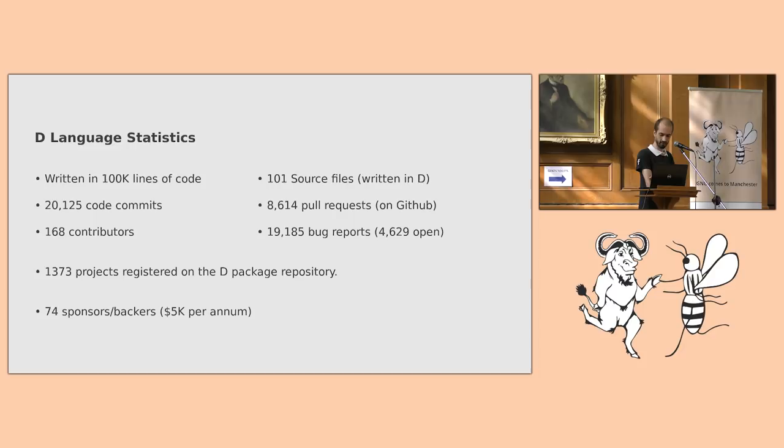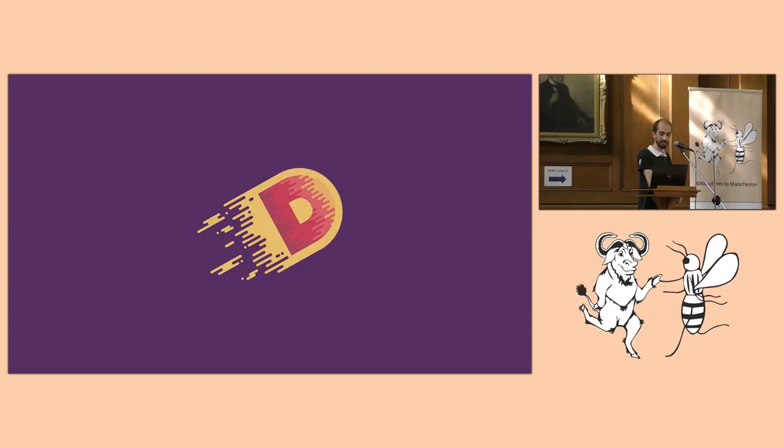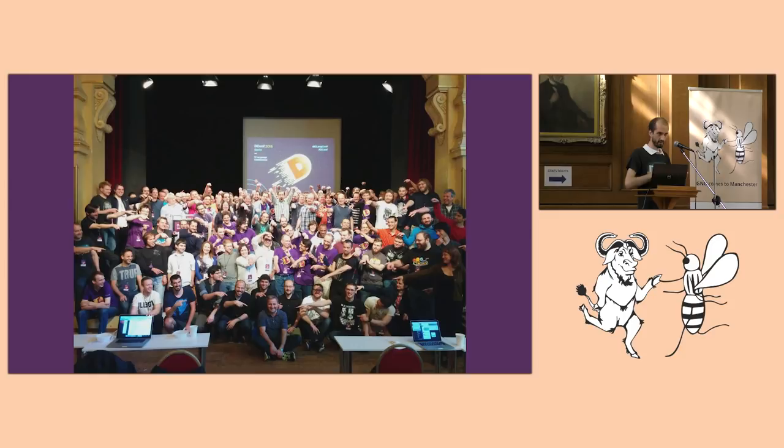There's also a pretty vibrant community. There's currently over 1,300 projects which are registered in our package repository. Our package repository is fairly new, so that's probably not representative of all the software out there. And we currently have 74 sponsors and backers on Open Collective, generating more or less about 5,000 per annum towards the D Language Foundation. This is only based on public reports. I don't know what private investors are giving to us. Also in the community, we have our own mascot.